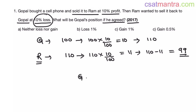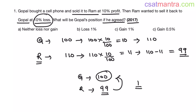Gopal originally bought at 100 rupees. Now Ram wanted to sell it back at 99 rupees. If Gopal agrees, it would be 1 rupee profit, because earlier he was getting the cell phone at 100 rupees and now he is getting it at 99 rupees. So it is 1 rupee profit for him. Since 1 rupee is 1% of 100 rupees, the gain is 1%. So C is your answer.